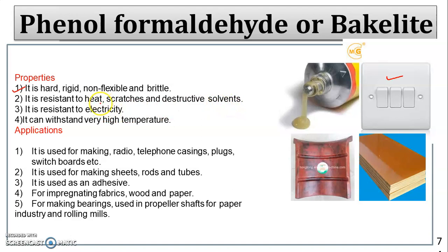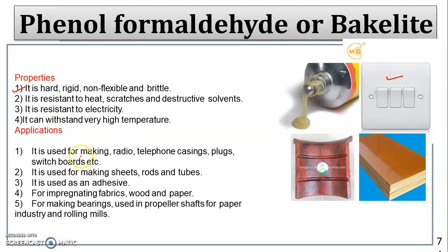Bakelite is resistant to heat — even when heated it will not become soft. It is scratch resistant and resistant to electricity. It can withstand high temperatures, which is why pressure cooker handles, iron handles, and other hot object handles are prepared from Bakelite.